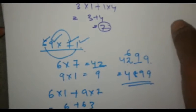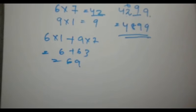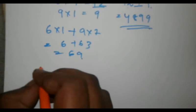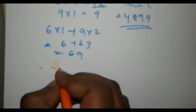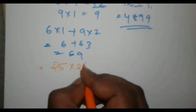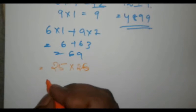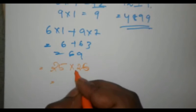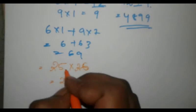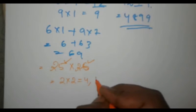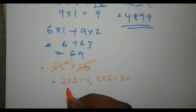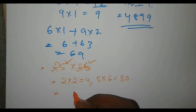Now we are going to try another example: 25 into 26. First, 2 into 2 is equal to 4. Then 5 into 6 is equal to 30. So we have 4, space, 30.